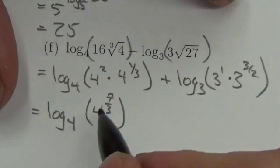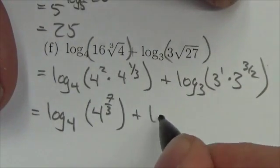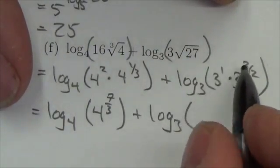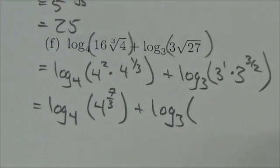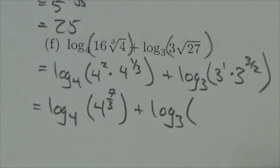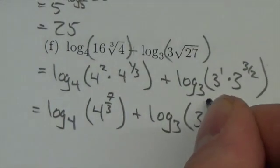So this is going to be log base 4 of 4 to the 7/3 plus log base 3, this is 1 plus 3/2. Okay well 1 of the common denominator, 1 is 2/2 plus 3/2 is 3 to the 5/2.